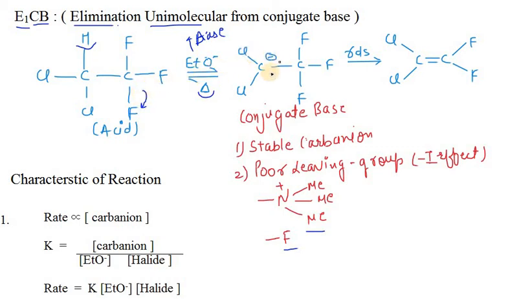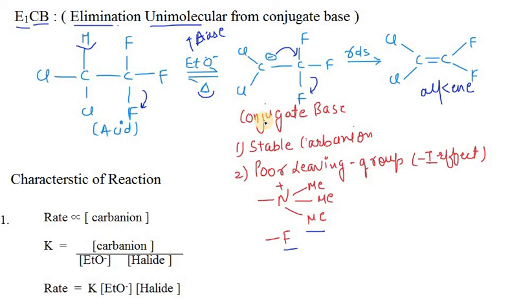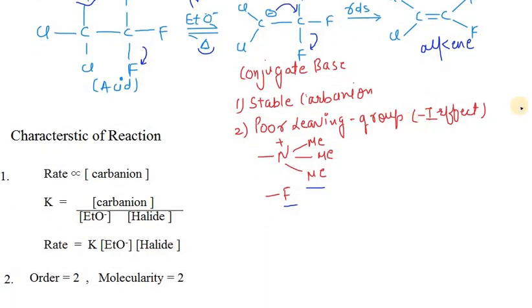After the conjugate base is formed, the fluoride starts to leave, and the negative charge tries to form a double bond, giving us an alkene. The conjugate base forms a stable carbanion, which also improves the leaving group ability. The carbanion must be very stable — the more stable it is, the more the reaction proceeds via the E1CB pathway. Stability is enhanced by multiple electron-withdrawing (-I) groups, which stabilize the negative charge. The rate-determining step is the breaking of the sigma bond to form the alkene.